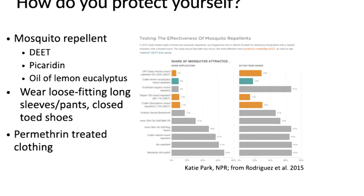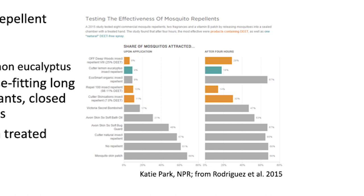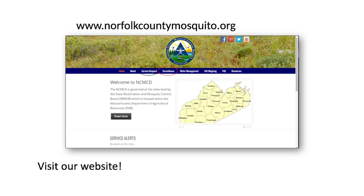I like to include this photo from an NPR article in 2015 because they were testing all different types of mosquito repellents, and they found that upon application — not after four hours, but upon application — Victoria's Secret Bombshell perfume was a very effective mosquito repellent. It was just kind of funny and interesting that they found some repellency with that perfume. It was at an extremely high dose, not an amount you'd want to put on your body, but I found it very interesting. I also encourage you to visit our website — we have a lot of different programs, and we like to include a lot of current information there.